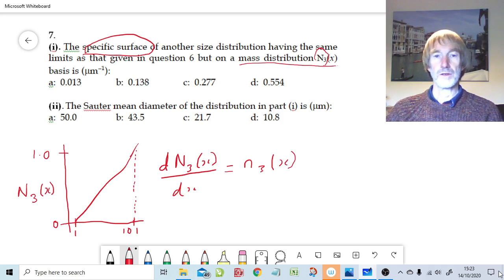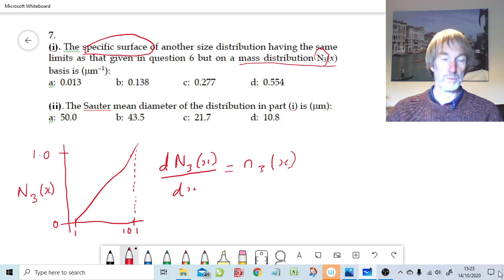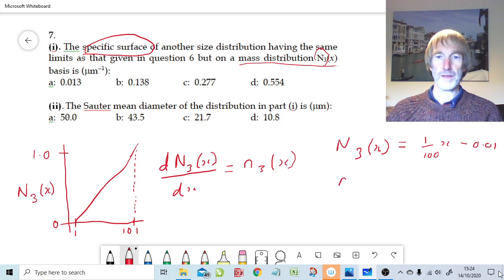In the previous question, when we looked at this by inspection, this graph, we came up with the equation that capital N0x, only in our case now it's going to be capital N3x, was equal to 1 over 100x minus 0.01. And then we differentiate that, just as we did in question 6, we'll end up with n3x is equal to 1 over 100.